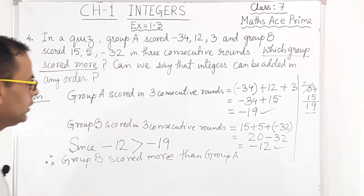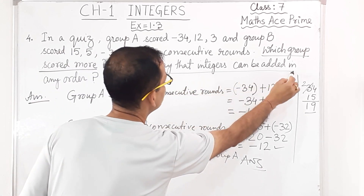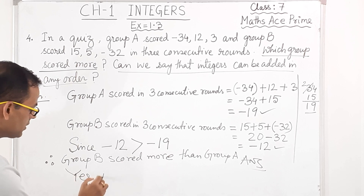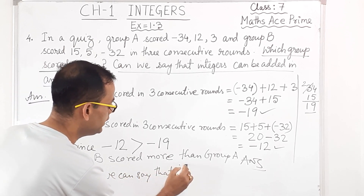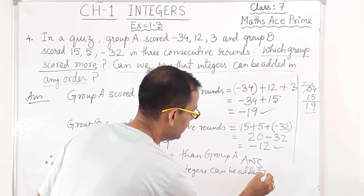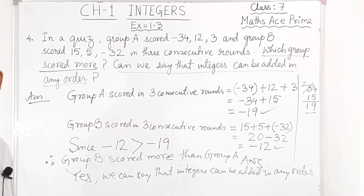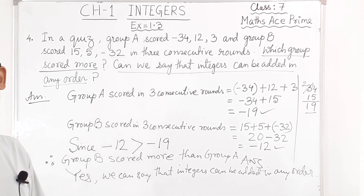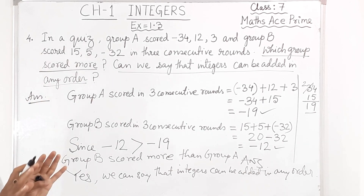The answer is finished — very easy. There is one more question: can we say that integers can be added in any order? Yes, the answer is yes — we can say that integers can be added in any order, because we have learned the properties of addition: the commutative property. When you add two integers in any order, the result will be the same.